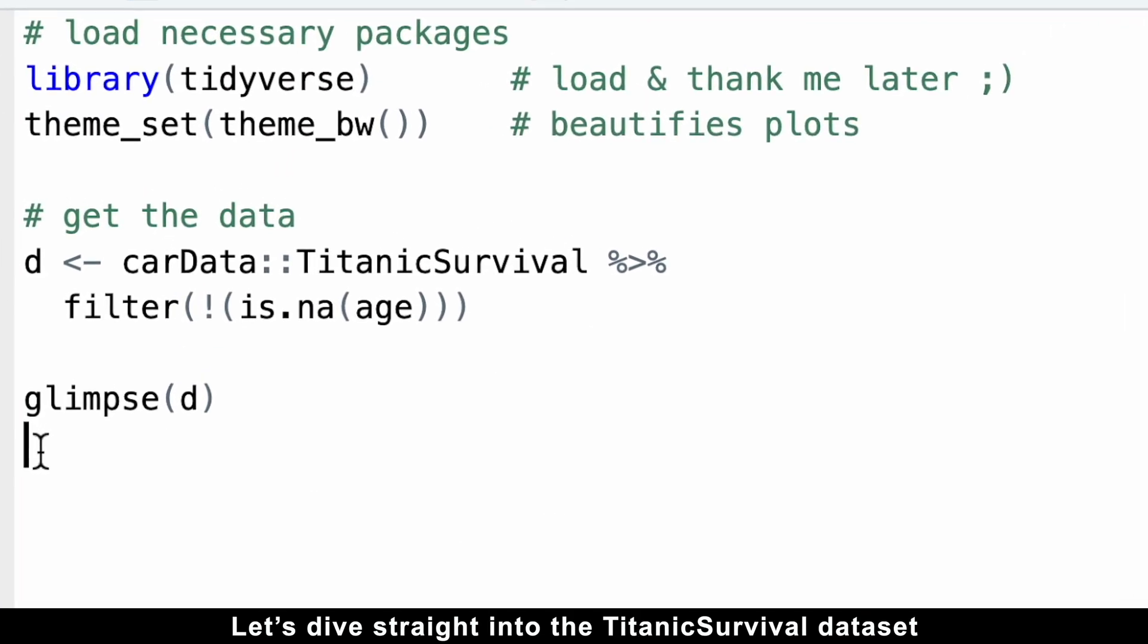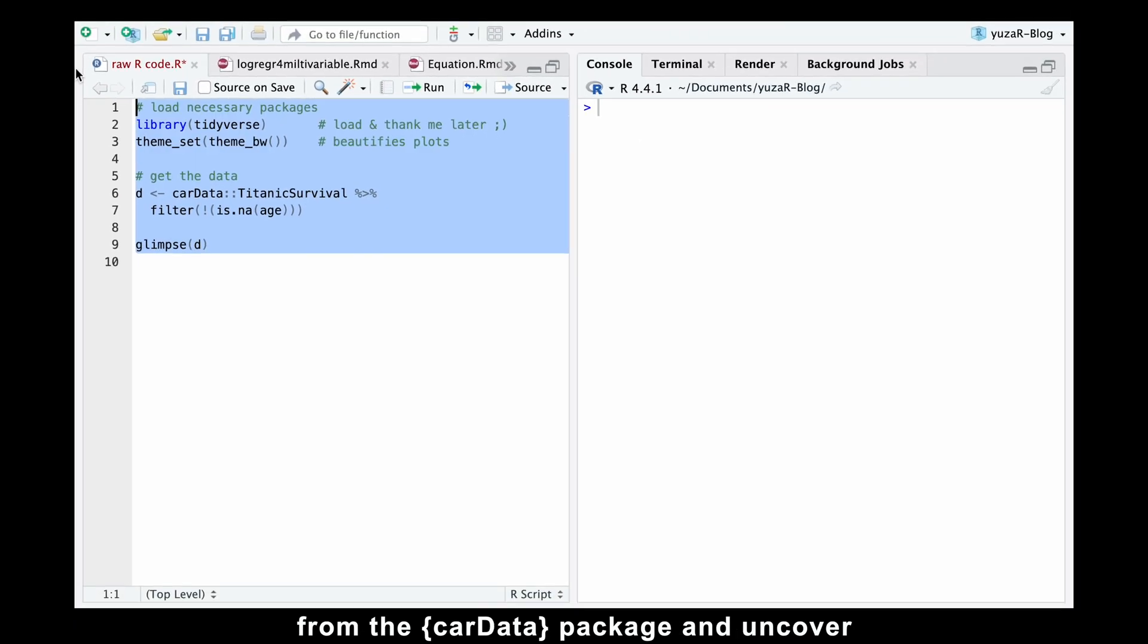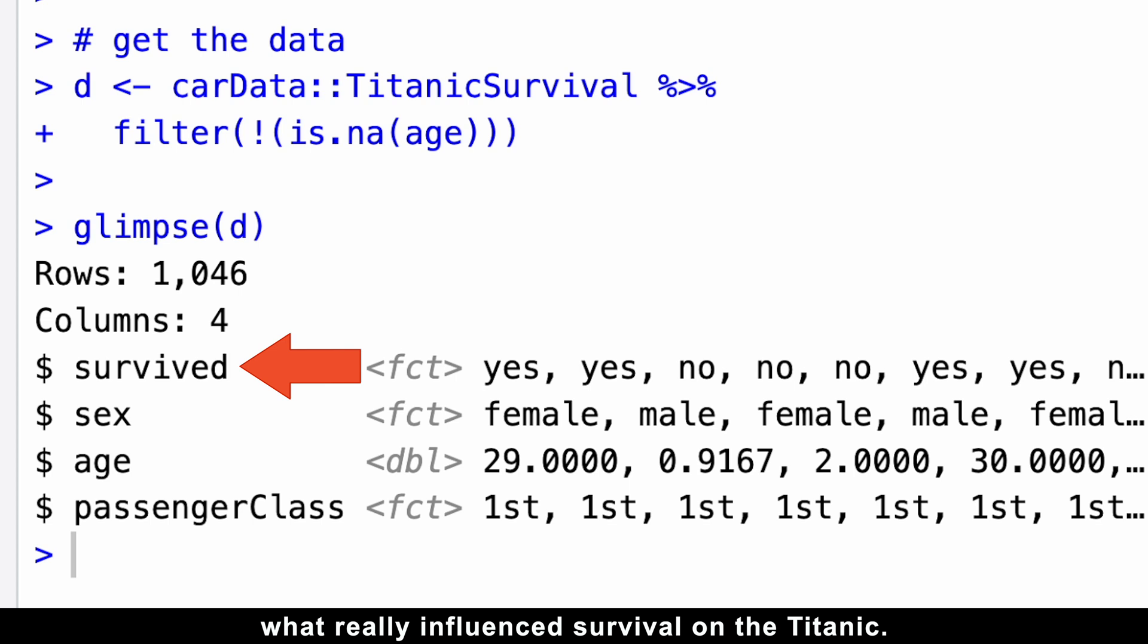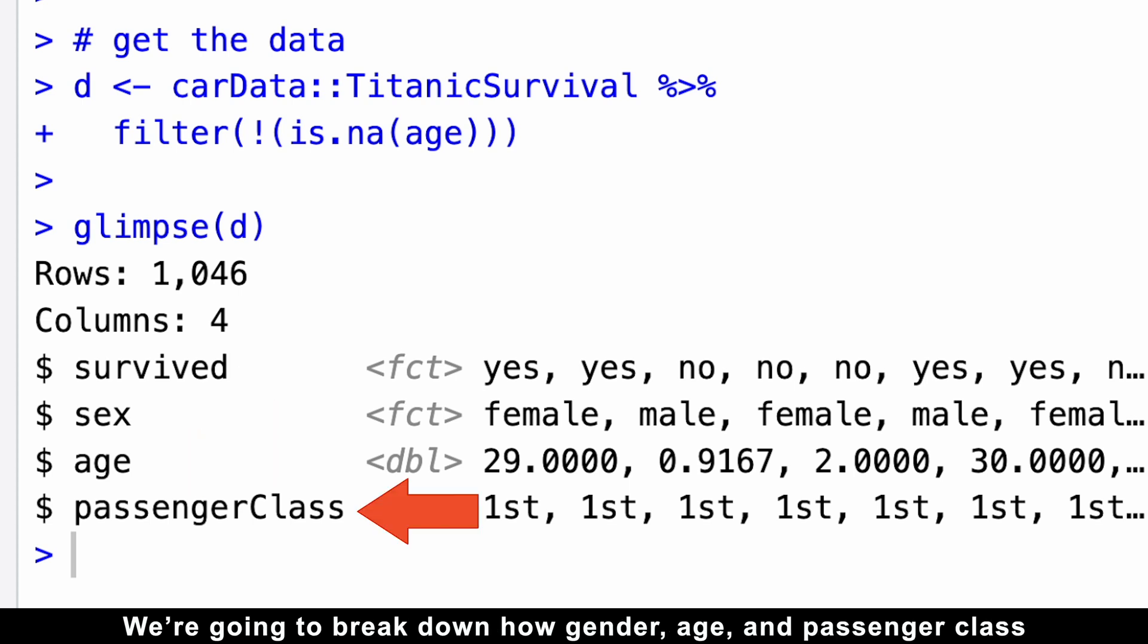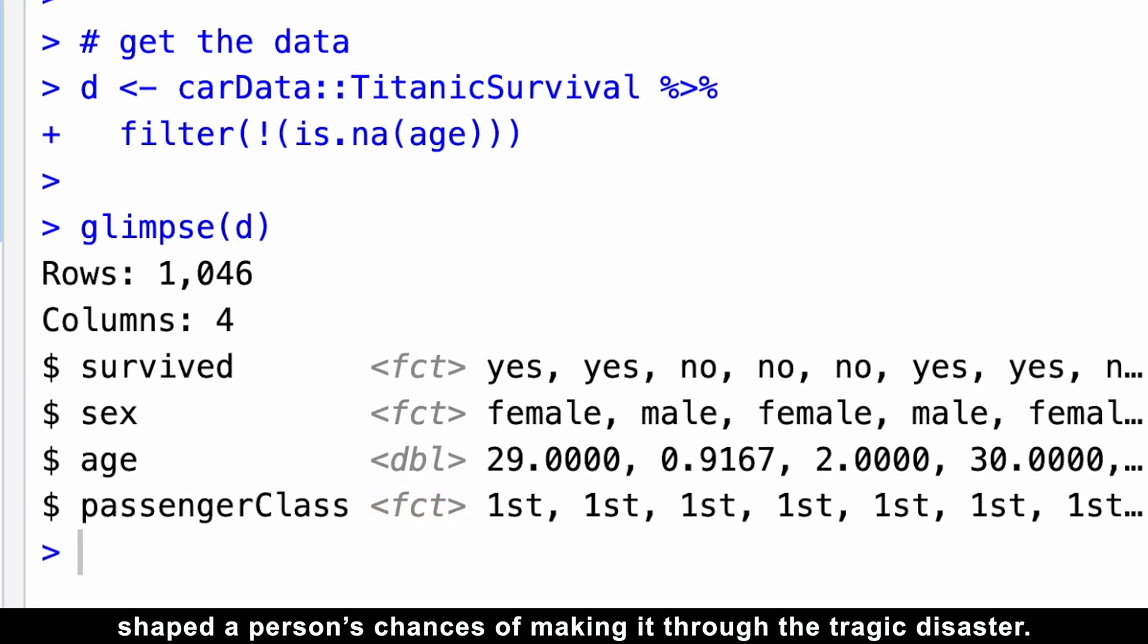Let's dive straight into the Titanic survival dataset from the CarData package and uncover what really influenced survival on the Titanic. We're going to break down how gender, age, and passenger class shaped a person's chances of making it through the tragic disaster.